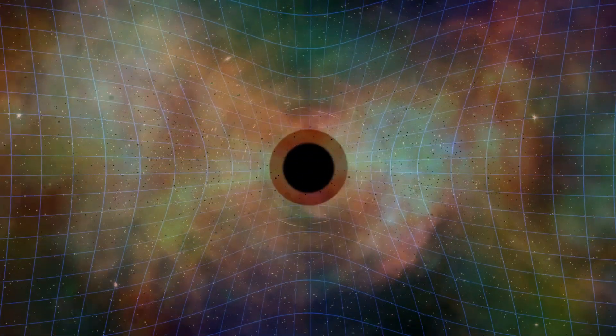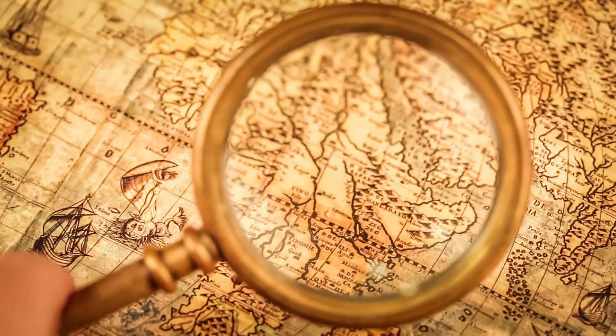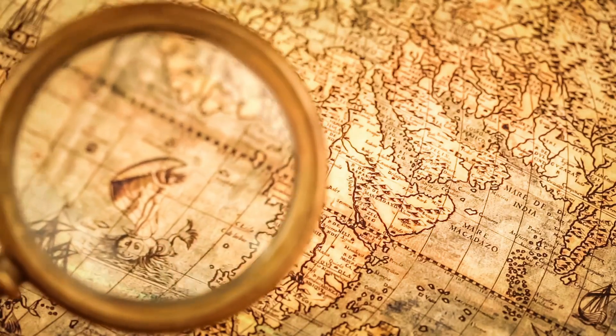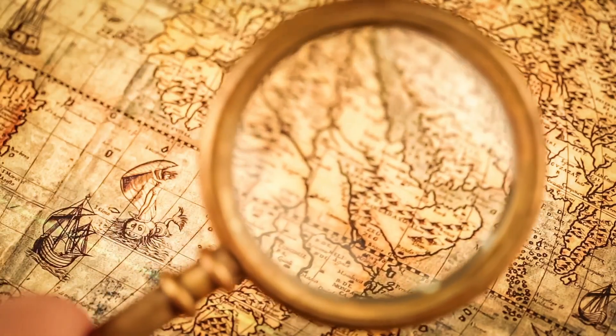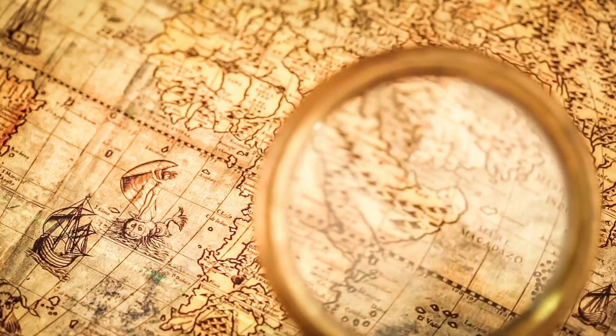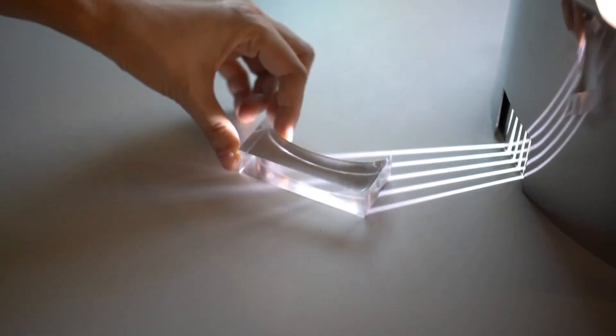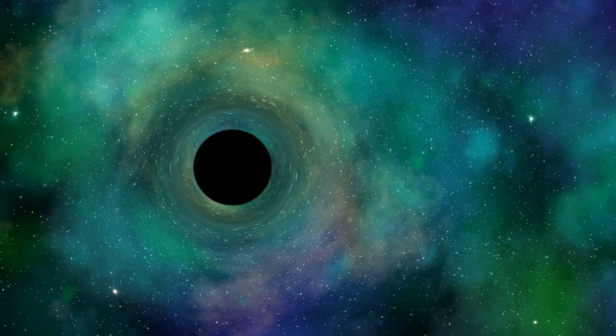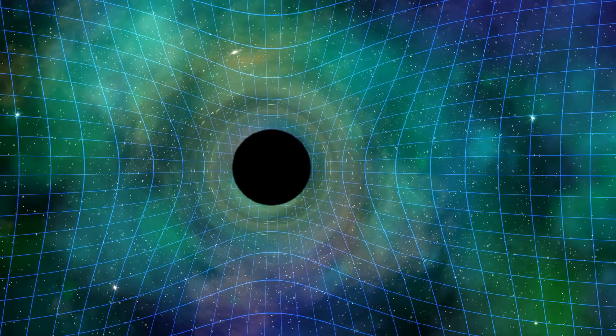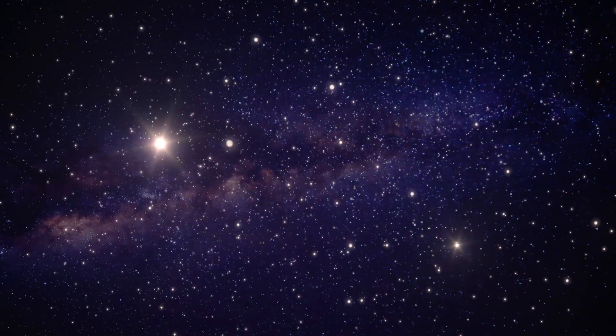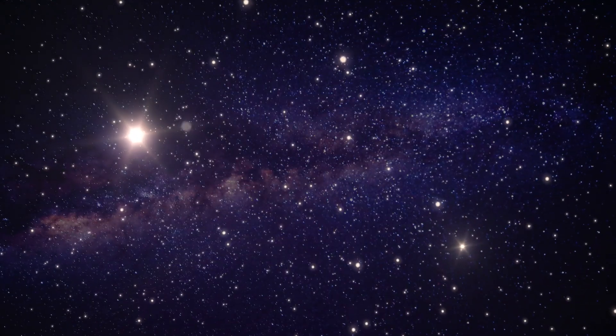To understand the concept of gravitational lensing, let's consider an analogy. Imagine a magnifying glass held up to a piece of paper with writing on it. As the light passes through the curved surface of the magnifying glass, it bends and focuses, making the text appear larger and clearer. Similarly, the gravitational pull of a galaxy acts as a lens, bending the path of light and allowing us to see distant objects more clearly.